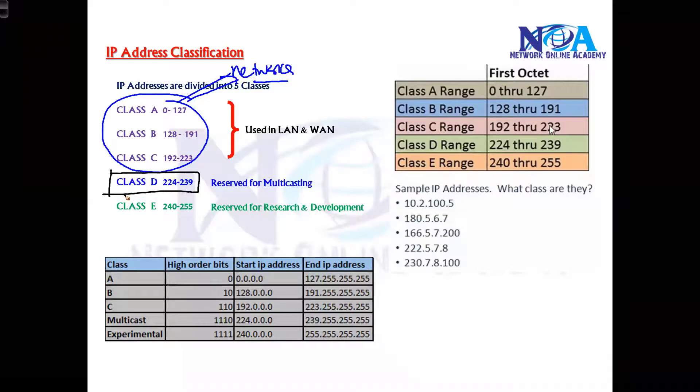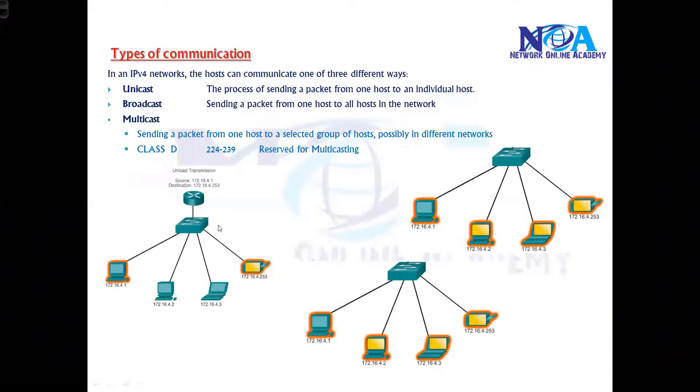Because the class D is reserved for multicasting, we cannot use this address to any device in the network. Multicast traffic for hosting some multicast video conferencing applications. And the class E is reserved for research and development, for R&D. So practically we will not be using these two.